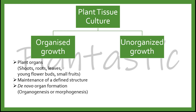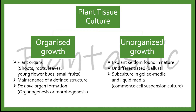Unorganized growth starts with the explant that is seldom found in nature. It is undifferentiated callus, which are clusters of cells. There are subcultures in general media and liquid media for the commenced cell suspension culture. The undifferentiated callus can be differentiated upon the supplementations in the media. In this video, we will focus on only organized growth, which is known as the micropropagation technique.